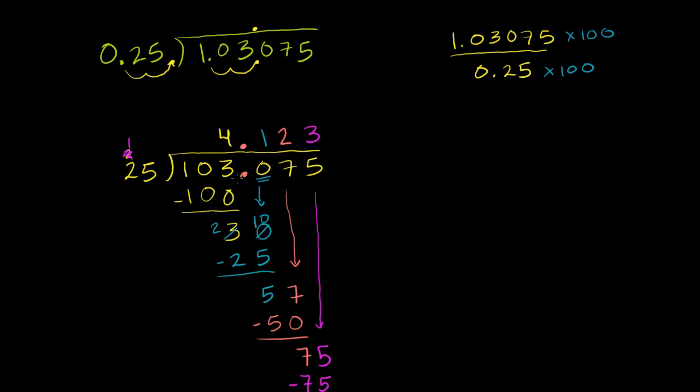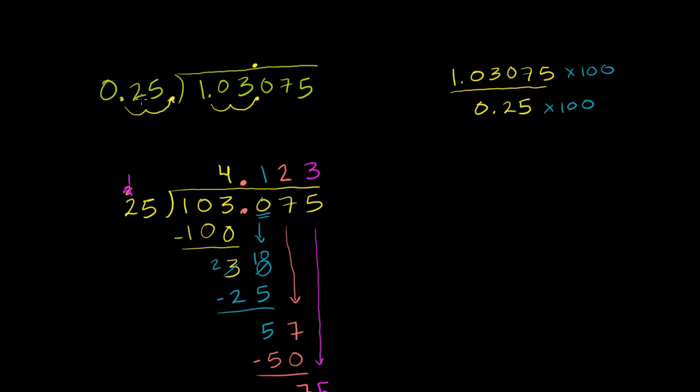So 25 goes into 103.075 exactly 4.123 times. Which makes sense. Because 25 goes into 100 about four times. This is a little bit larger than 100. So it's going to be a little bit more than four times. And that's going to be the exact same answer as the number of times that 0.25 goes into 1.03075.